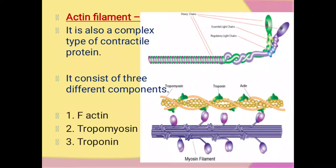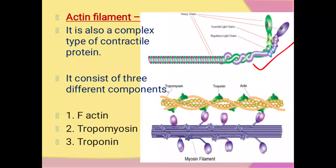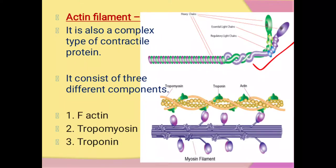Now we are going to study the actin filament. We have already studied the myosin filament — the double helix structure and myosin head with cross bridges. The actin filament is a complex type of contractile protein, composed of three parts: first, F-actin; second, tropomyosin; and third, troponin.